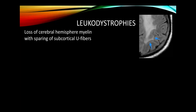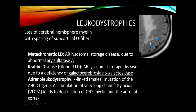Dismyelinating conditions include the leukodystrophies — loss of cerebral hemisphere myelin with sparing of U-fibers. Metachromatic leukodystrophy is due to arylsulfatase-A deficiency; Krabbe disease is due to galactosylceramidase deficiency — these affect infants with a rapidly progressive course. Adrenoleukodystrophy is due to a defect in the ABCD1 gene (X-linked recessive), accumulating very long-chain fatty acids, and can present in middle-aged men with a myelopathy.